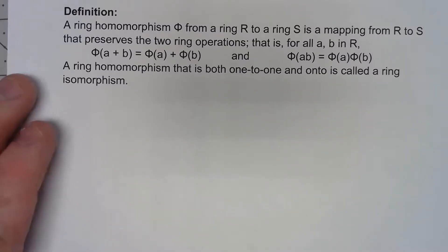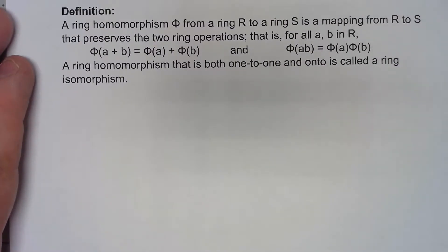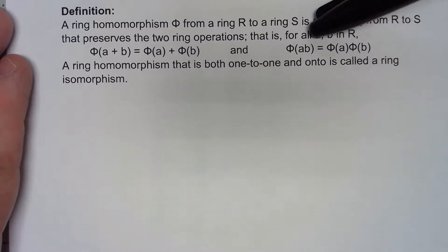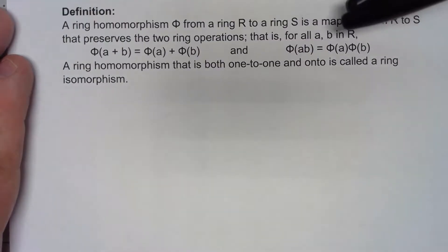Just as we had for groups, we have the idea of a ring homomorphism, and really it works pretty much like you would expect. Since we have two different operations, addition and multiplication for a ring, the homomorphism has to preserve both of those operations.